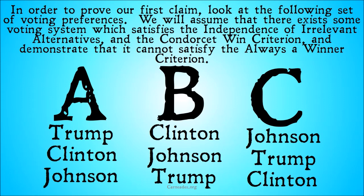We'll look at the following Condorcet paradox. We have voter A ranking Trump–Clinton–Johnson, voter B ranking Clinton–Johnson–Trump, and voter C ranking Johnson–Trump–Clinton. You'll notice that each candidate beats one of the other candidates and loses to one of the other candidates. So in this situation, there is no Condorcet winner. But that doesn't imply that something satisfying the Condorcet-Win criterion will never give a winner.